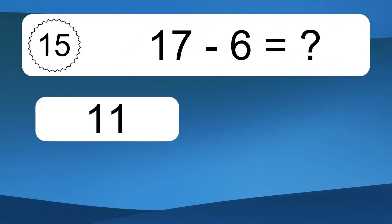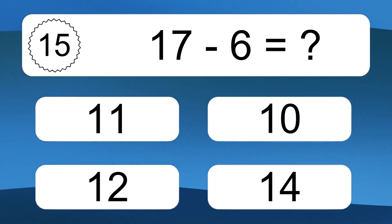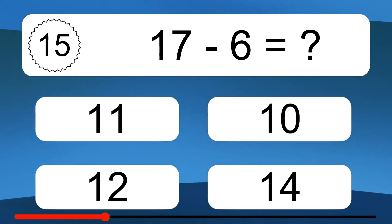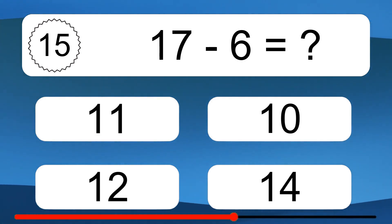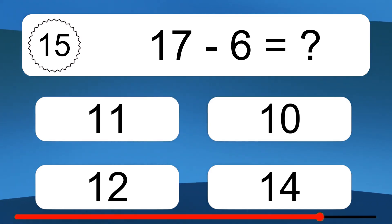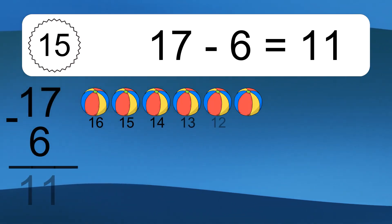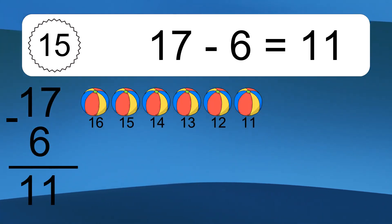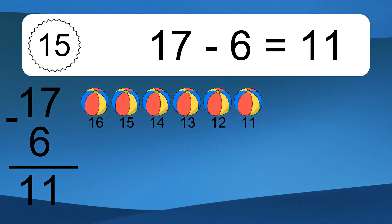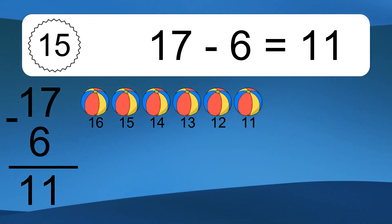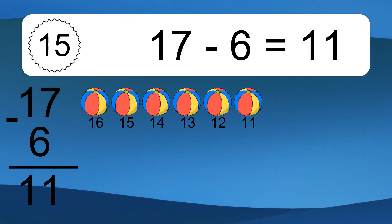17 minus 6 equals what? 17 minus 6 equals 11. Let's count it: 16, 15, 14, 13, 12, 11.